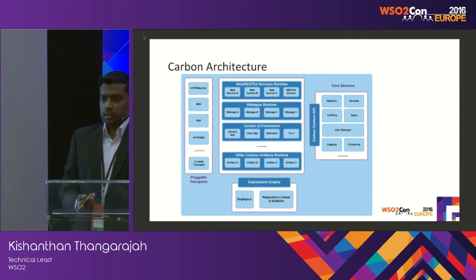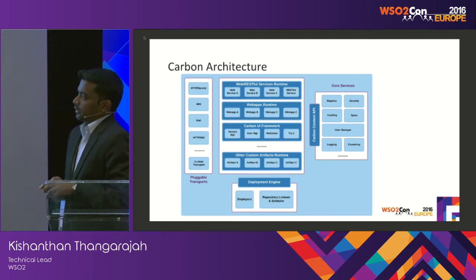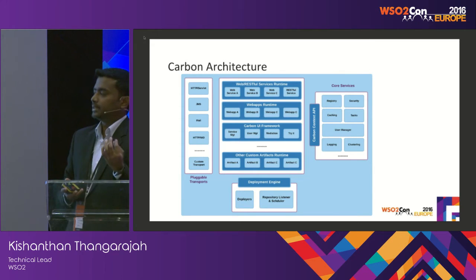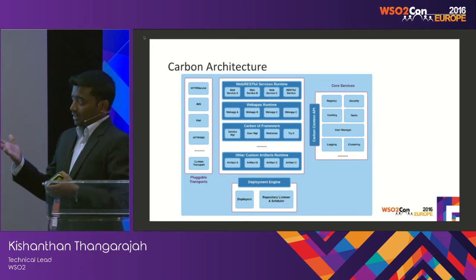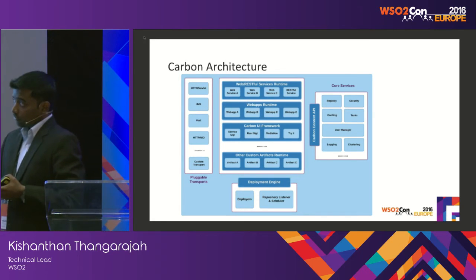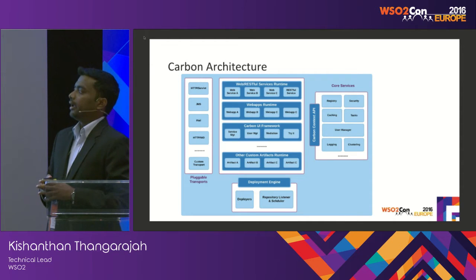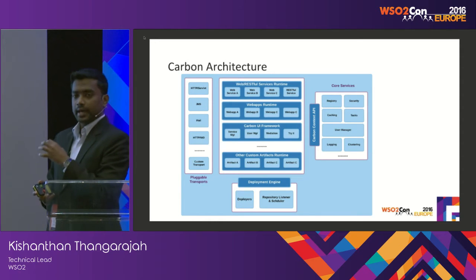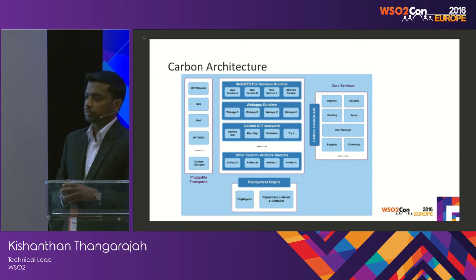Let's now look at how the runtime architecture looks. This is a typical Carbon Core runtime when you start a server. The first and important component is the transport framework, where messages are received from and sent to clients or backends. This transport framework supports many transports by default — for example, HTTP, servlet transport, JMS, and mail. It also has various extension points where you can plug in your own transport or transport protocol.